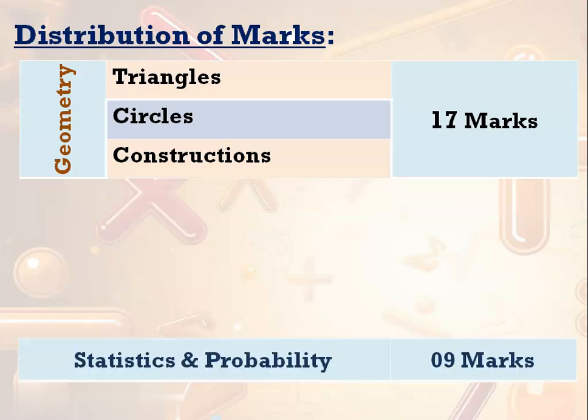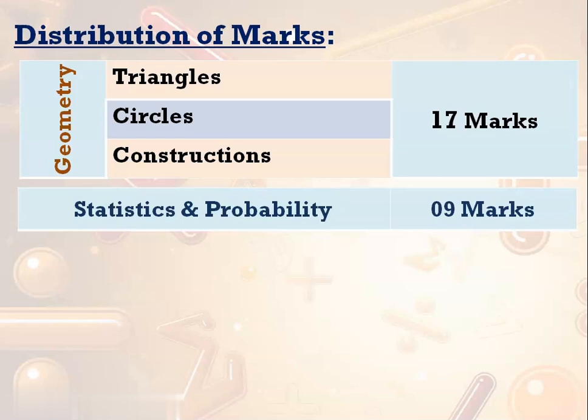The next branch is statistics and probability — a very easy branch. We can expect 9 marks from this branch. Generally 6 to 7 marks will go to statistics and another 2 to 3 marks will go to probability.